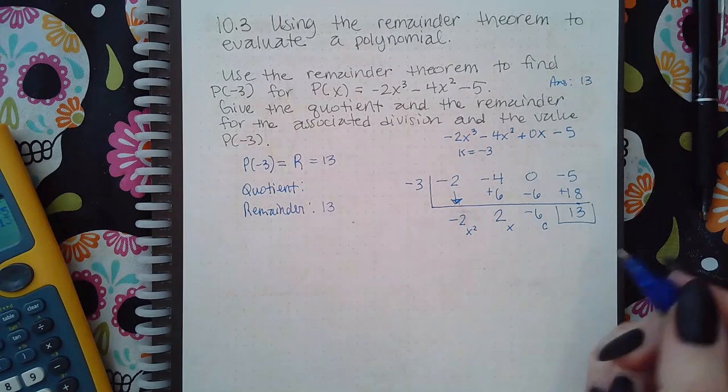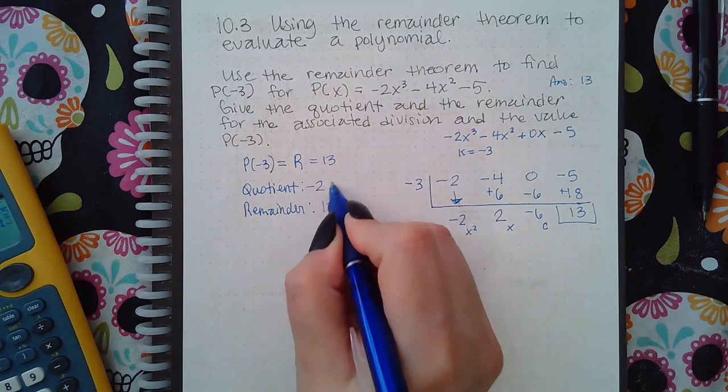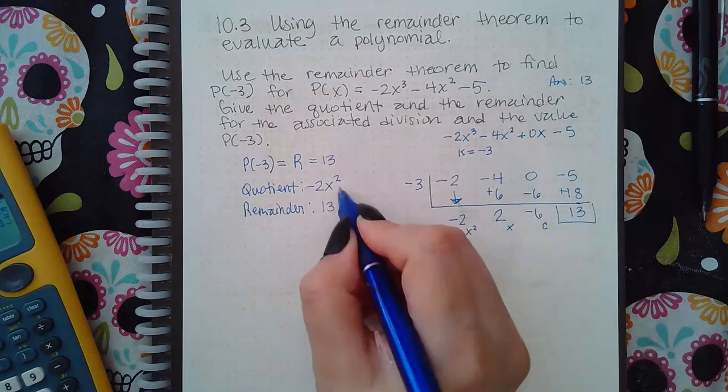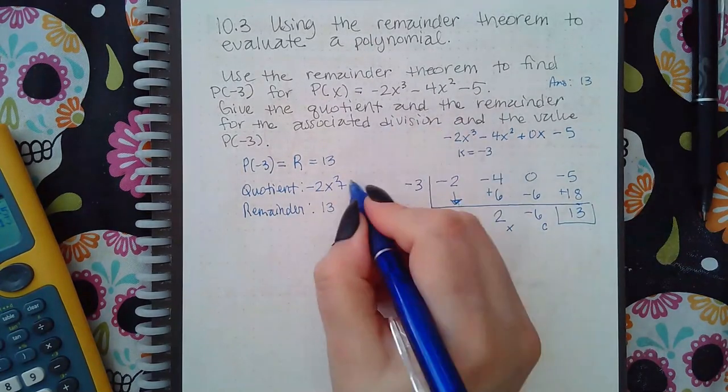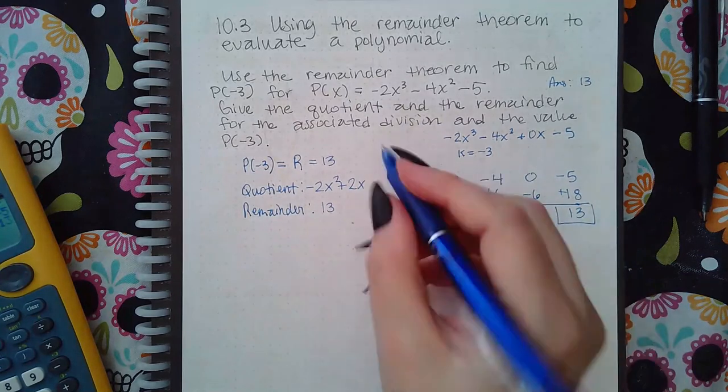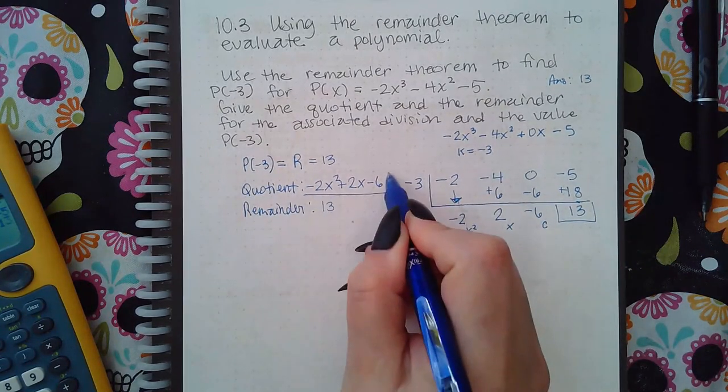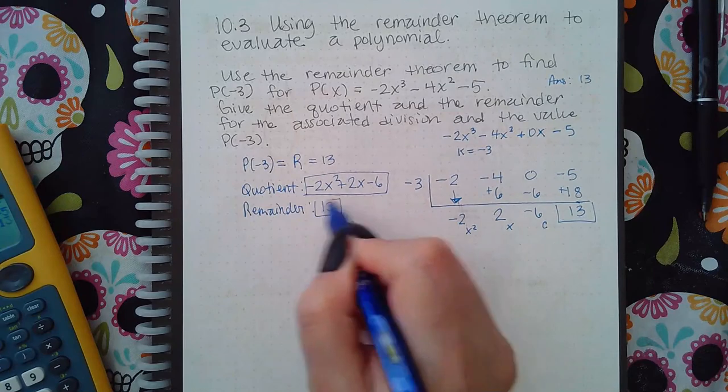Remember this is your constant, your x's, and then your x²s. So the quotient is going to be -2x² + 2x - 6. You have to fill in all three of these pieces.